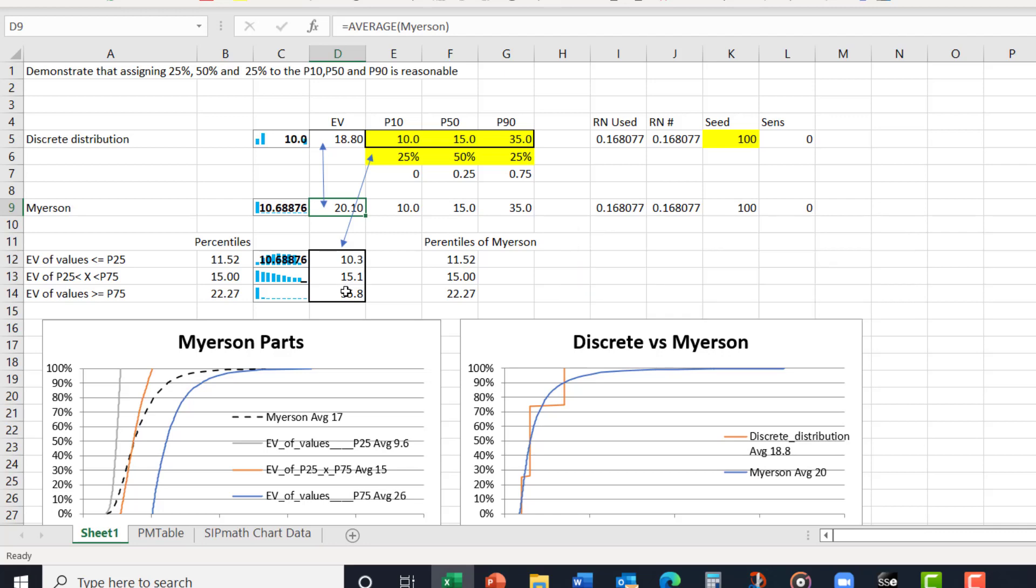So this is why I think using 25, 50, 25 is the right number, that represents the equal area solution.